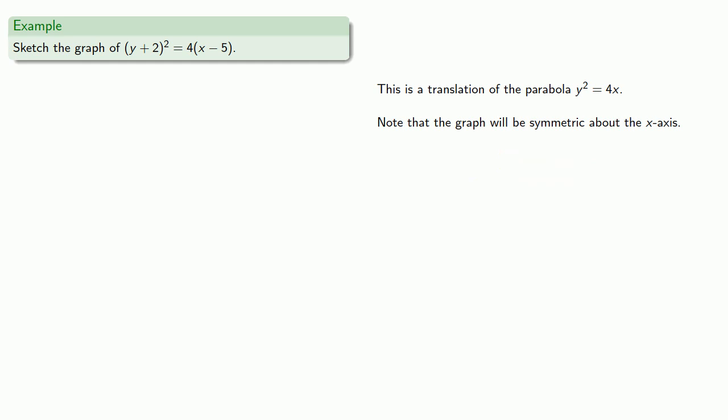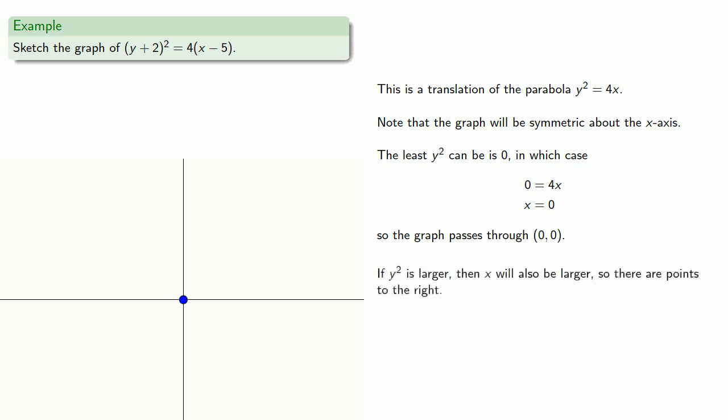And going to extremes, the least y squared can be is 0, in which case the graph passes through (0, 0). And if y squared is larger, then x will also be larger, so there are points to the right.